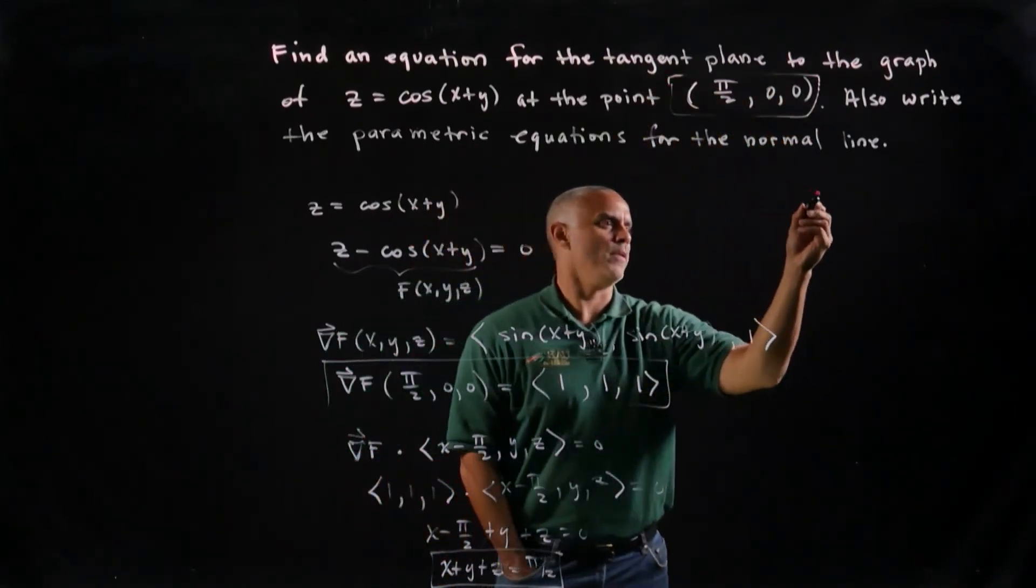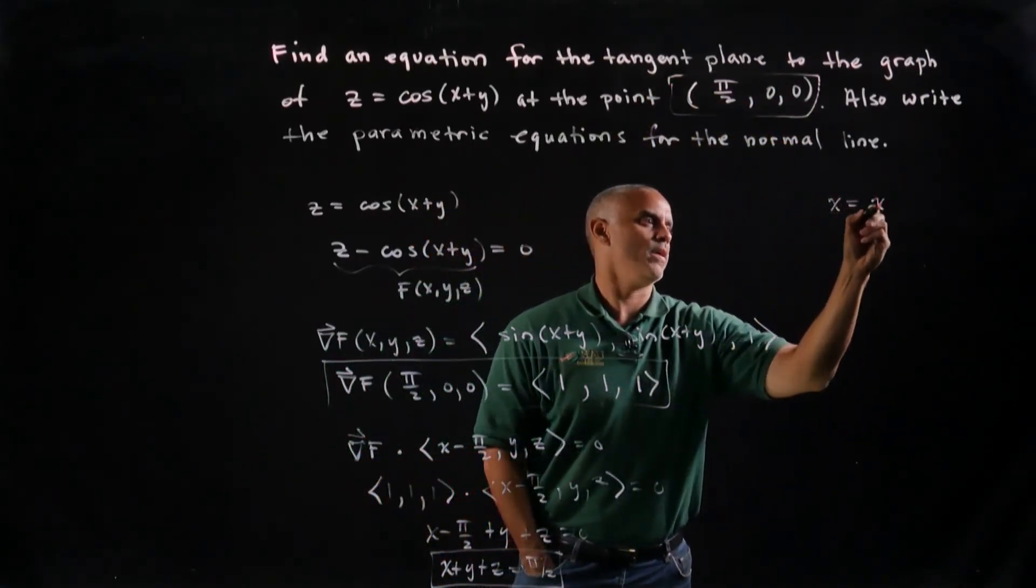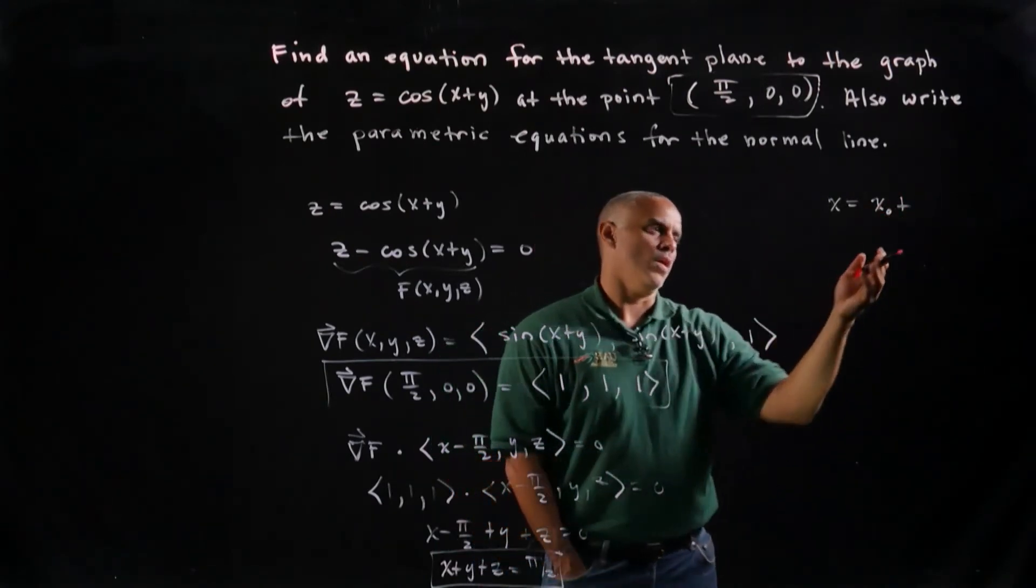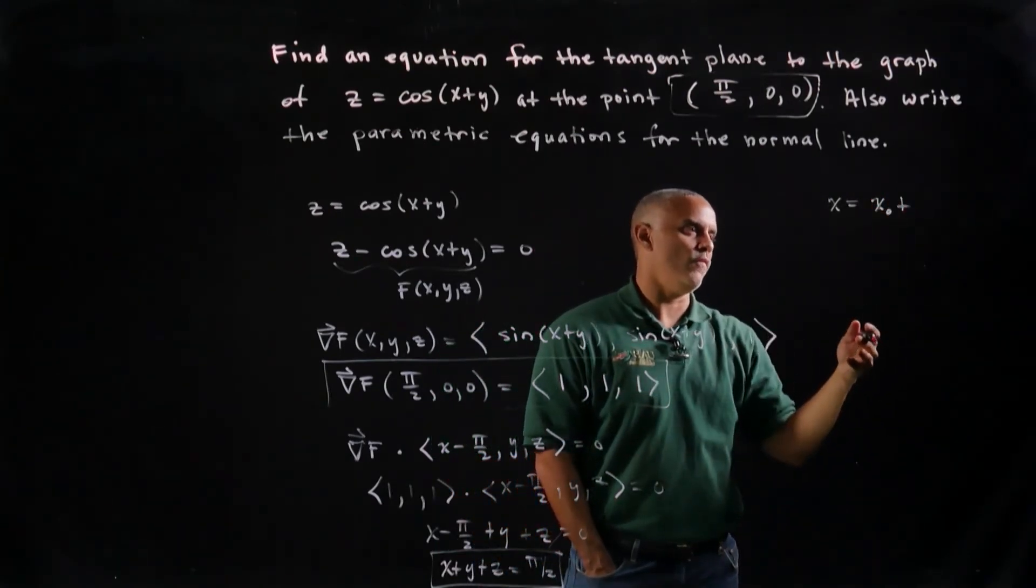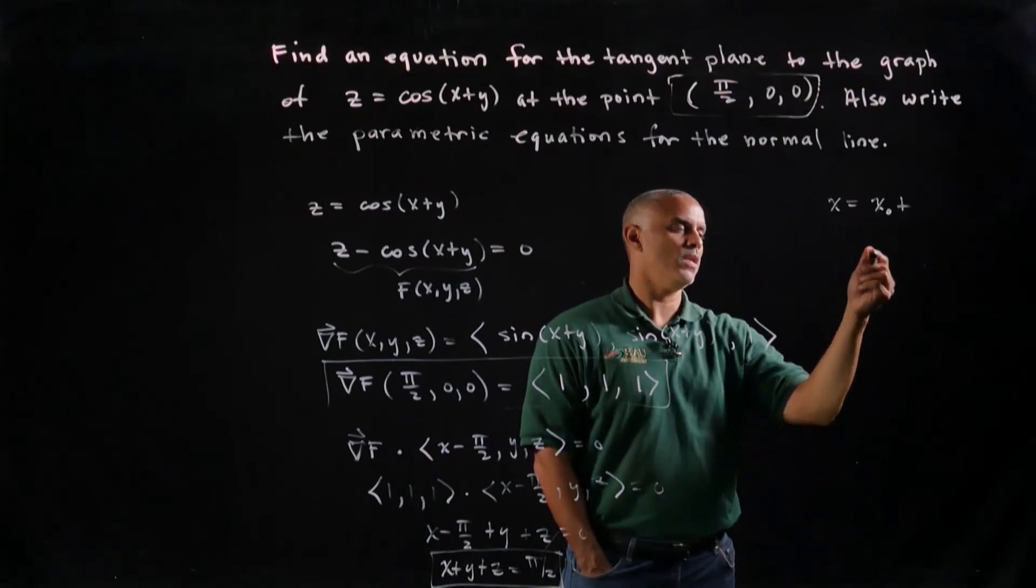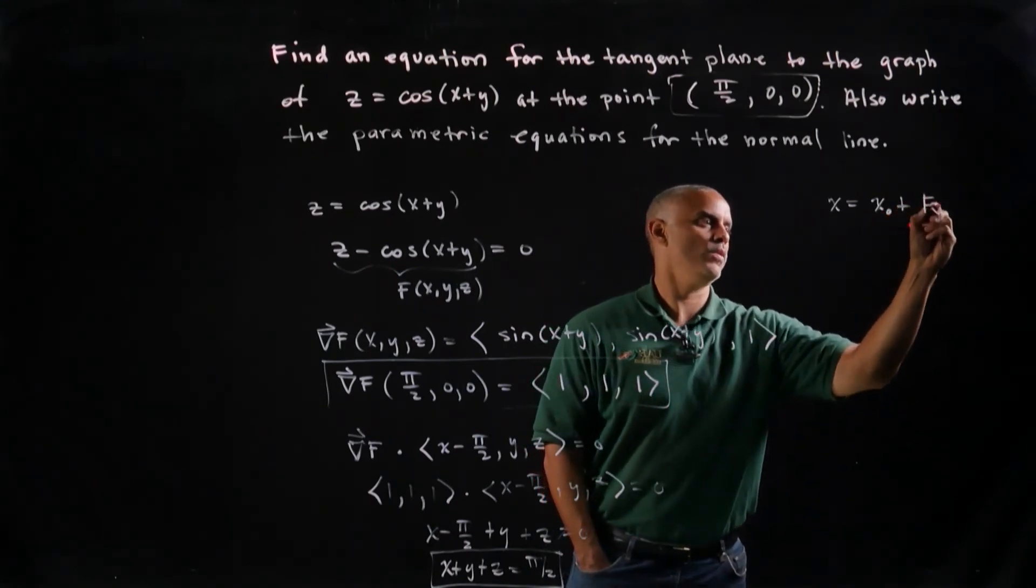And so the parametric equation of a line, if you recall, is just x equals x naught plus, we used to use a, b, and c, let's say for the direction numbers, but these are simply the components of the gradient.